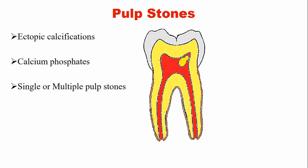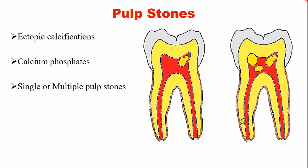This is a picture of a longitudinal section of a molar tooth. In this picture, you can see a single pulp stone in the pulp chamber. In this second picture, you can see multiple pulp stones — this is one pulp stone, second pulp stone, third. And this is another type of pulp stone that is embedded in the root dentine.